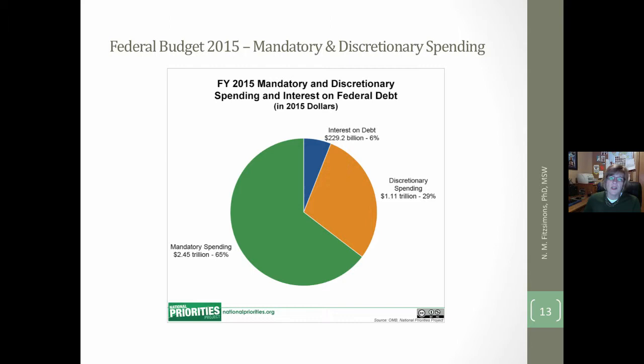This slide shows how much of spending goes toward mandatory spending — 65%, discretionary — 29%, and interest on the debt — 6%. Congress really controls, without going back and changing federal statute, only 29% of the discretionary spending budget.